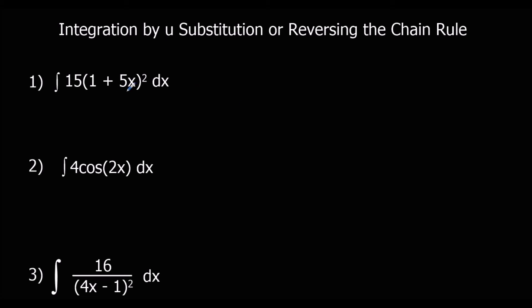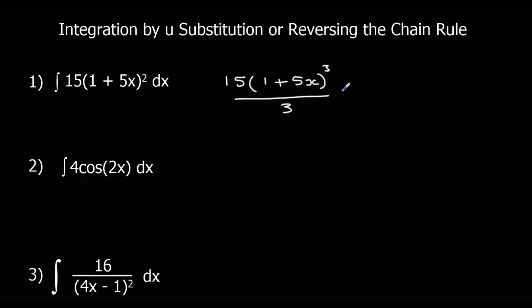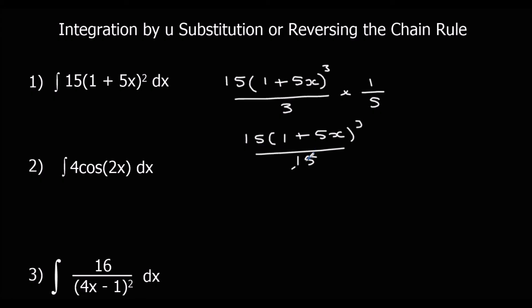Question 1: integrate around the bracket normally — add 1 to the power and divide by the new power. Then divide by the bracket differentiated, which is 5, so times by one fifth. That gives us 15 times (1 + 5x)^3 over 15, so the 15s cancel, leaving us with (1 + 5x)^3 plus c.